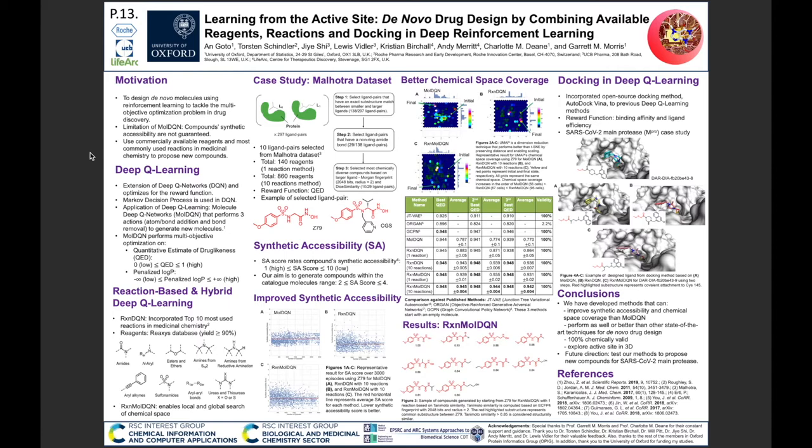My name is Anne Goto and my poster is regarding learning from the active site: de novo drug design by combining available reagents, reactions, and docking in deep reinforcement learning. The motivation behind this work is to design de novo molecules using reinforcement learning to tackle the multi-objective optimization problem in drug discovery. Our work is based on MolDQN, an application of deep learning which optimizes for a reward function including QED and penalized logP. MolDQN performs three actions: atom addition, bond addition, and bond removal to generate new compounds, but compound synthetic accessibility is not guaranteed.